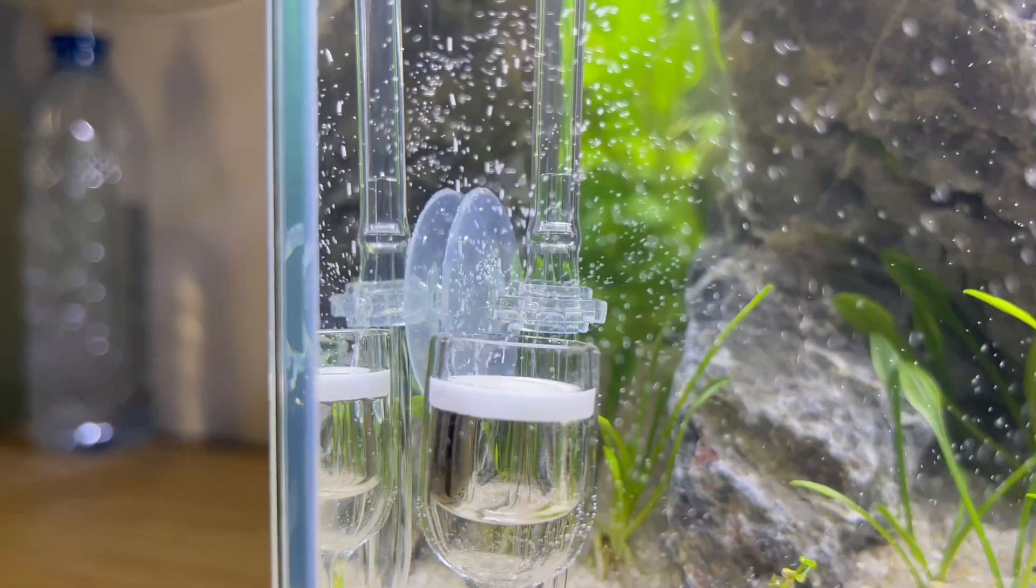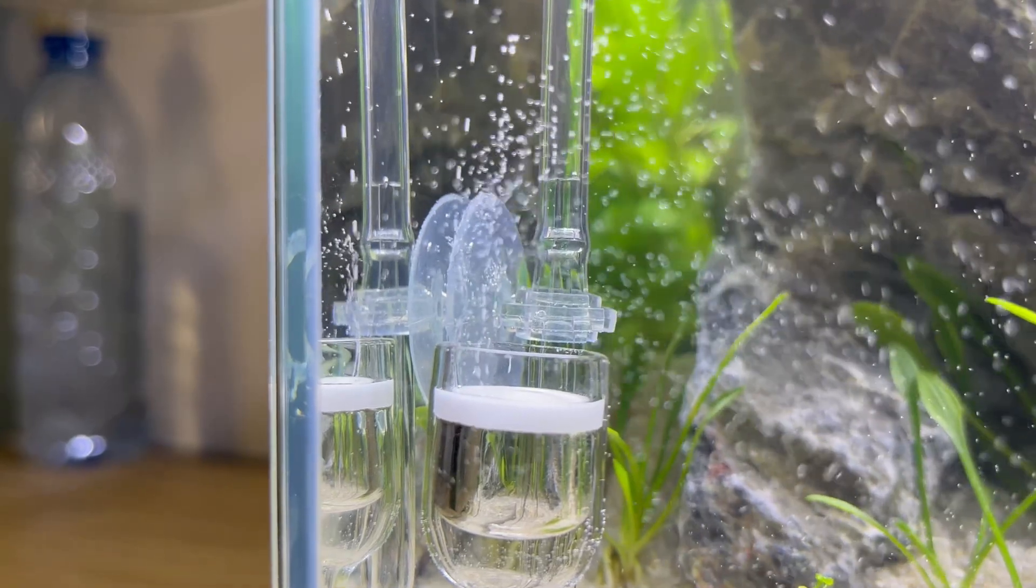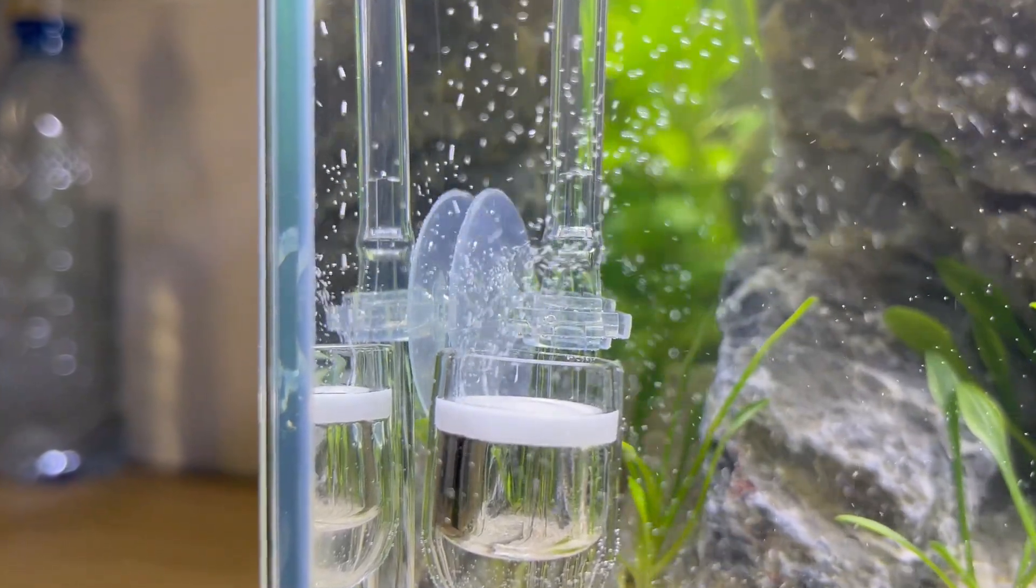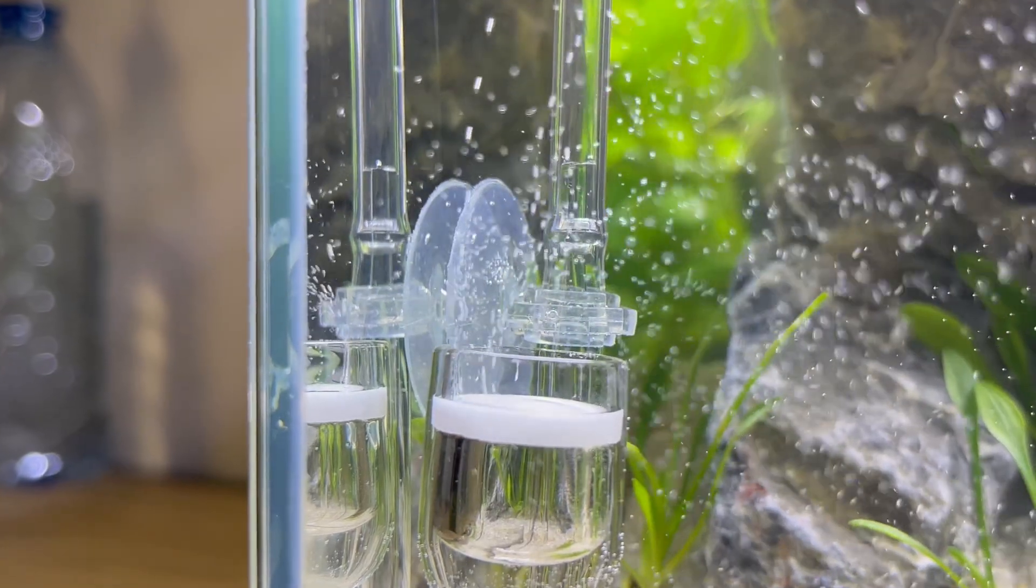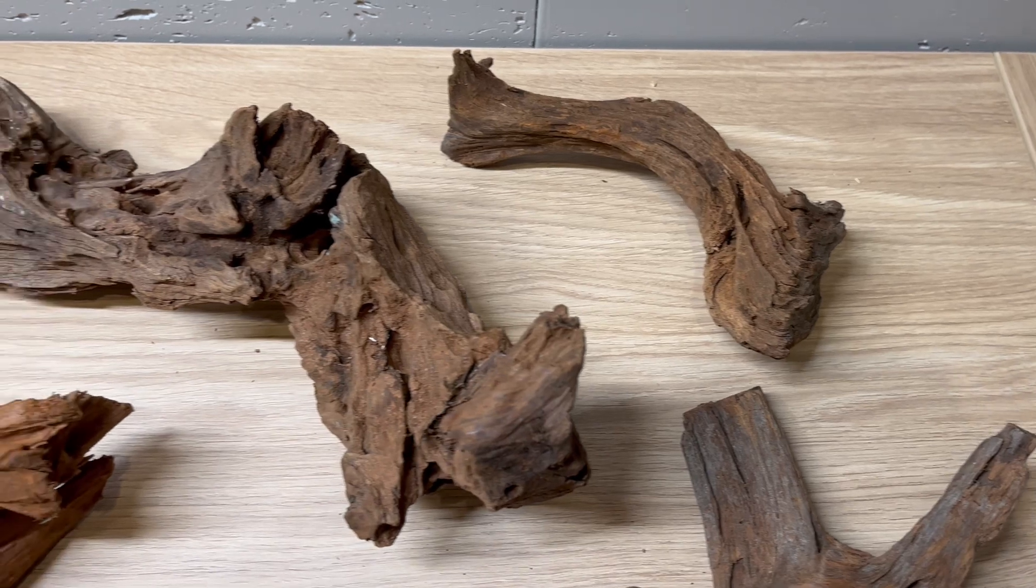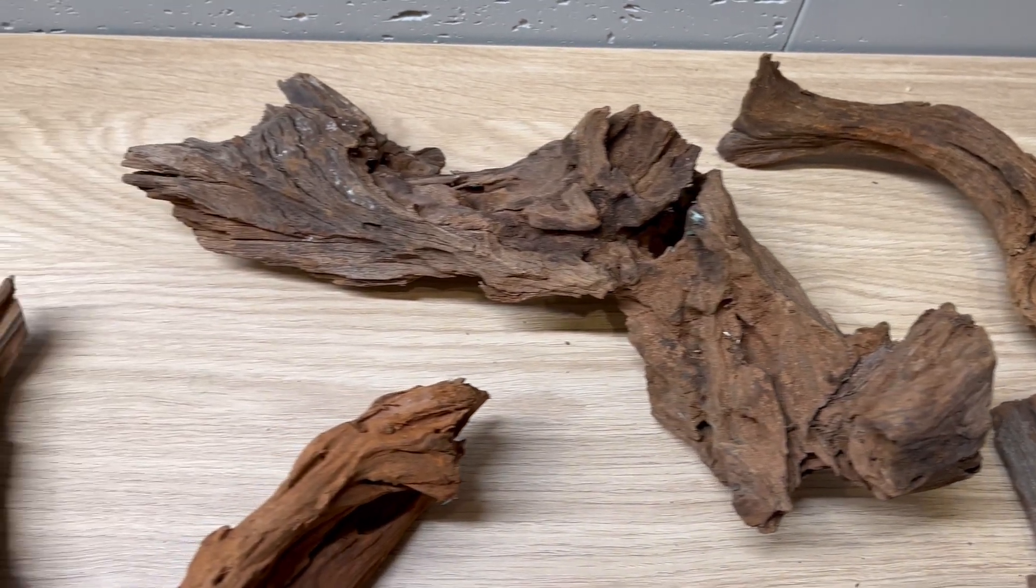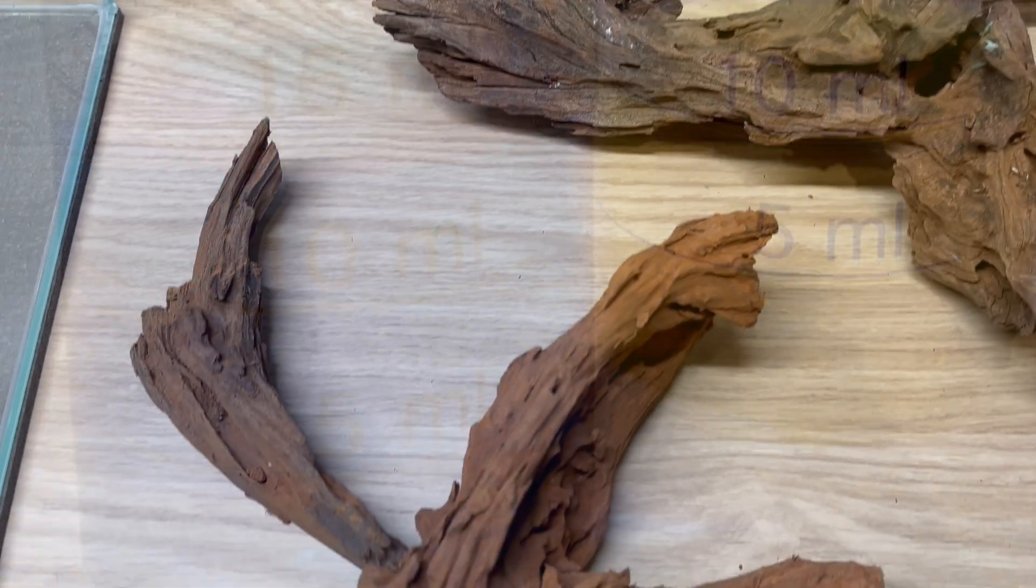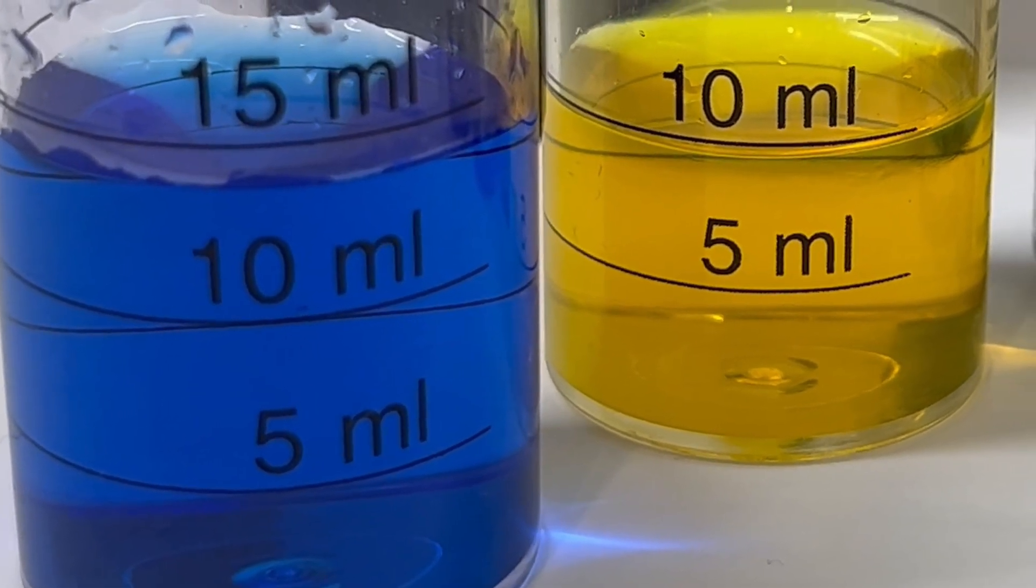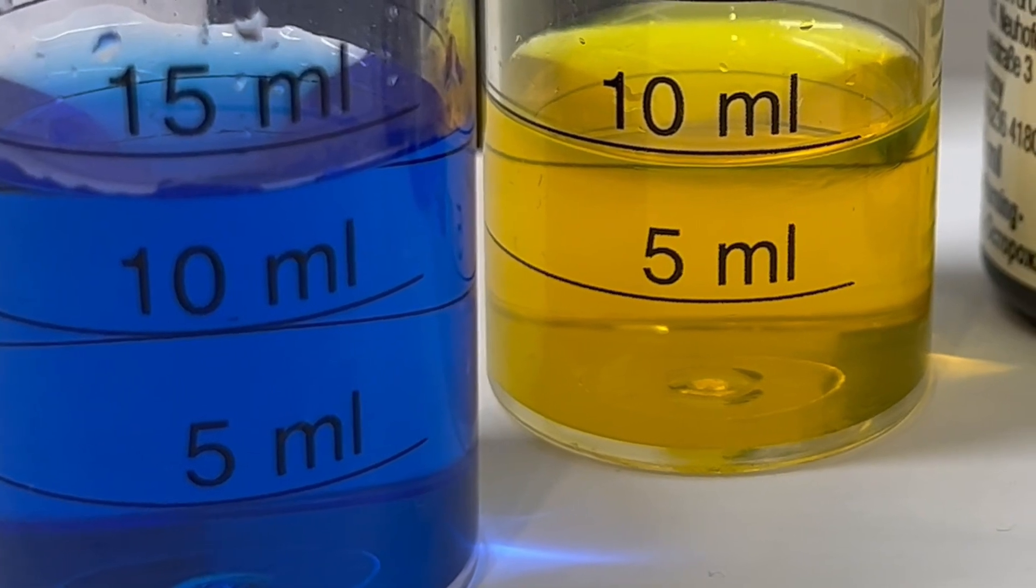But if you want to go the other way, so lower your pH, the most obvious solution would be to use CO2. This is by far the most effective method. You can add some wood because many types of driftwood will also lower your pH. And finally, you can use some chemicals, but this is something that I don't recommend for the beginners.